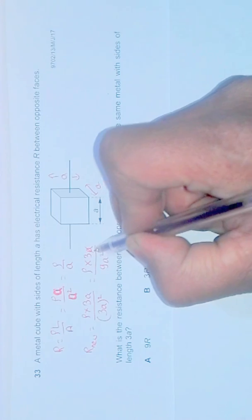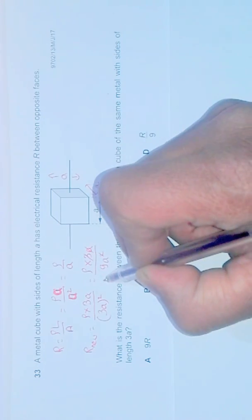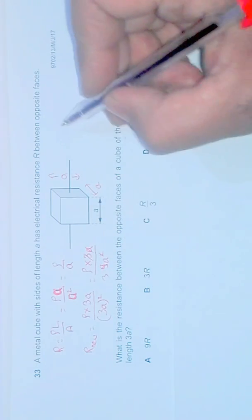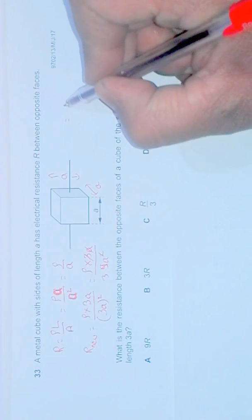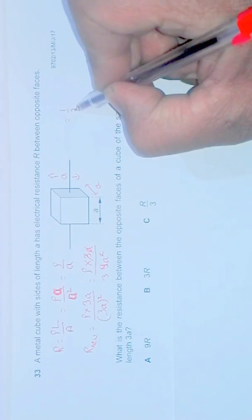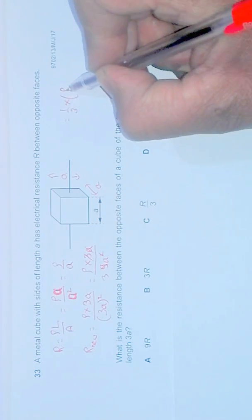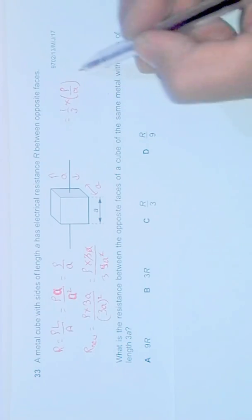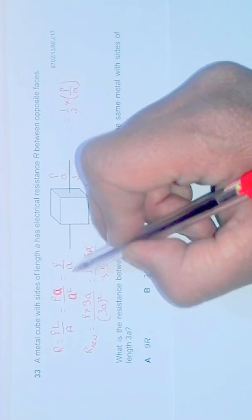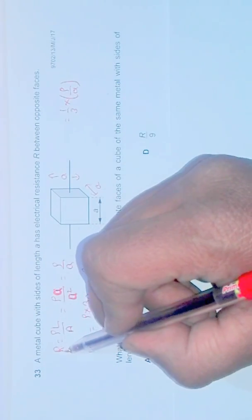If you cancel this A and A and 3 and 3, it becomes equal to 1 by 3 into rho by A. Now since rho by A is equal to the initial resistance,